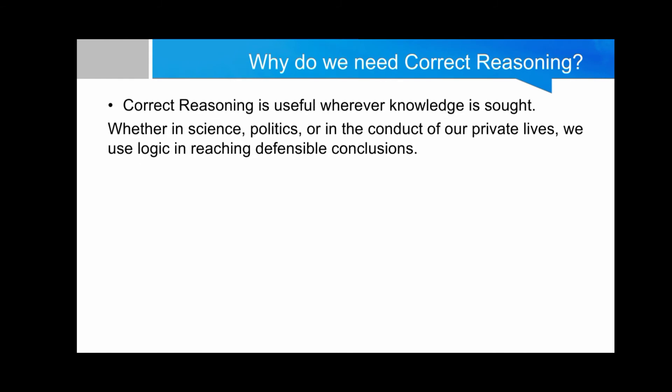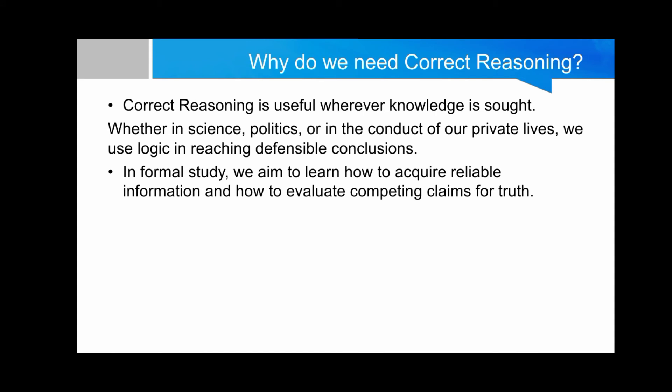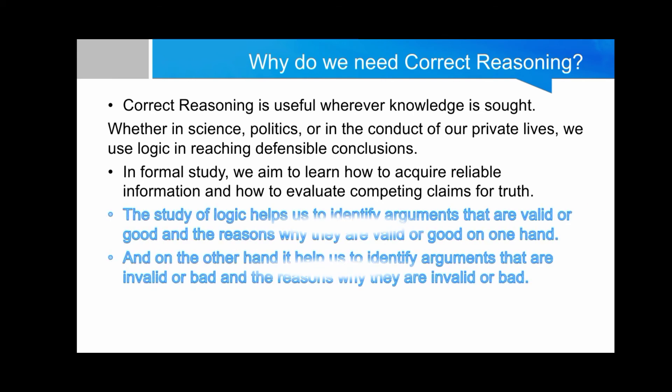Why do we need correct reasoning? Correct reasoning is useful wherever knowledge is sought — whether in science, politics, or in the conduct of our private lives. We use logic in reaching a defensible conclusion. In formal study, we aim to learn how to acquire reliable information and how to evaluate competing claims for truth.